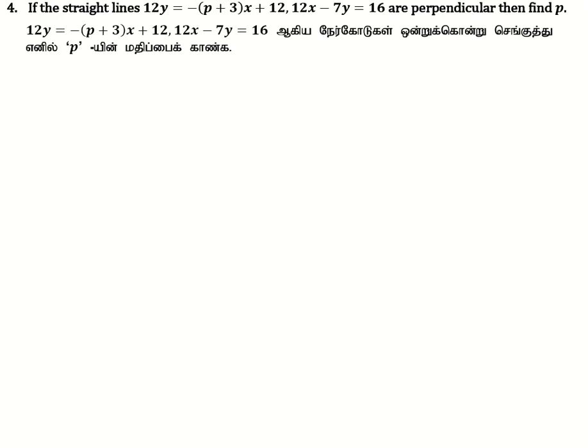If the straight line 12y = (-p + 3)x + 12 and 12x minus 9y = 16 are perpendicular, then find p.